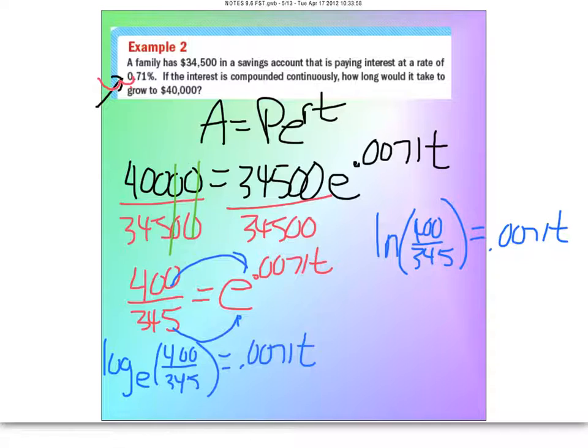To do the algebra on this, to get T by itself, just divide by the 0.0071 on both sides. So what I'm going to put in my calculator is I'm going to type the natural log of 400 over 345, hit enter, and then divide it by this value.